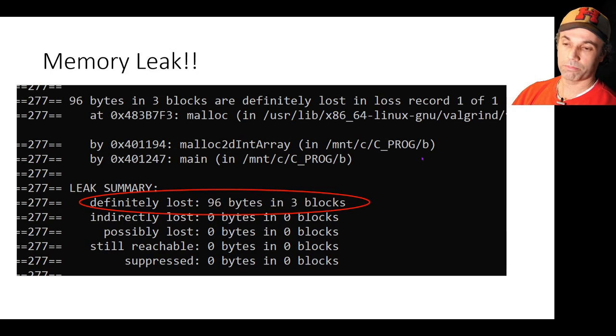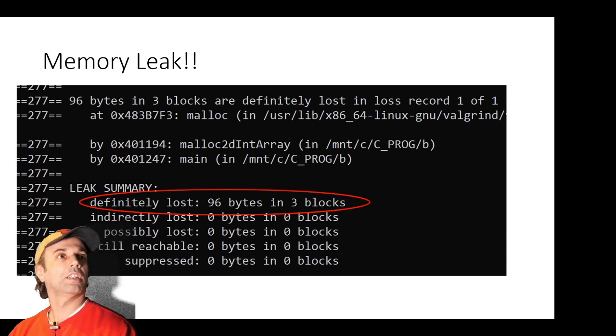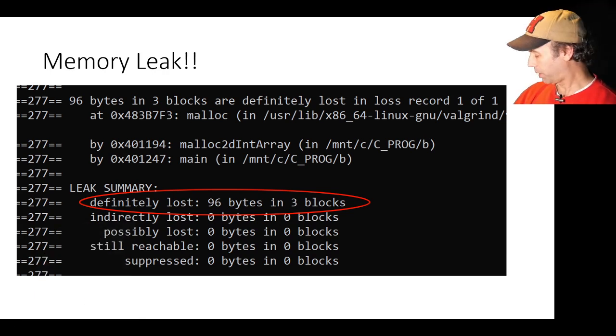Actually I do have evidence of that and conveniently it's on the next slide. Okay so I ran that program with Valgrind and you can see that we definitely lost 96 bytes in three blocks which sounds a lot like three rows of our array which had eight elements of four bytes each. So that sounds like 96 to me. Looks like we found it. Okay so it looks like you're right about that one but how do we do it properly? Don't worry that's coming on the next slide too.